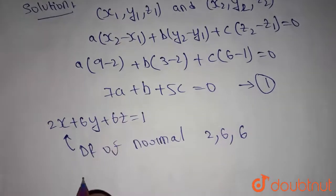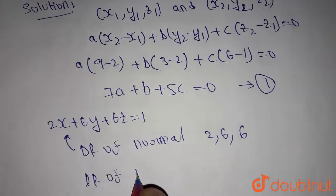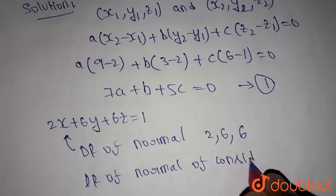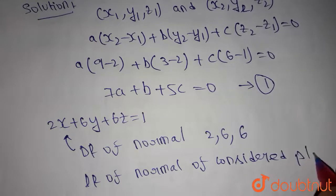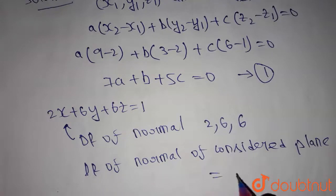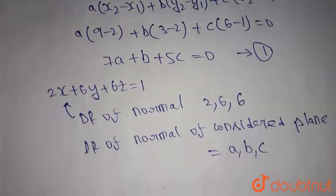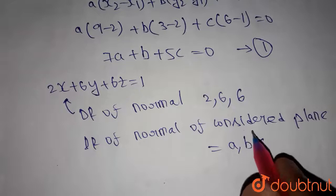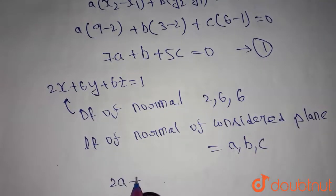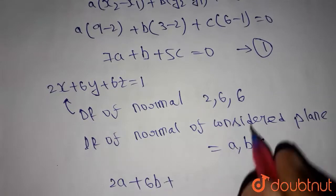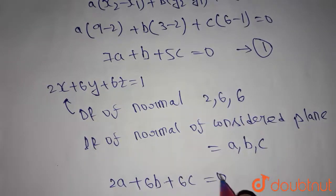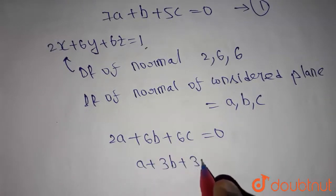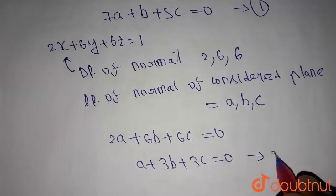The direction ratios of the normal of the considered plane are a, b, c. Since these two normals are perpendicular, their dot product equals zero: 2a + 6b + 6c = 0. Dividing by 2, we get a + 3b + 3c = 0. Let's call this Equation 2.